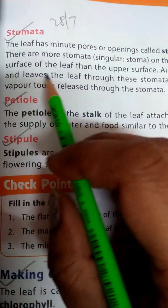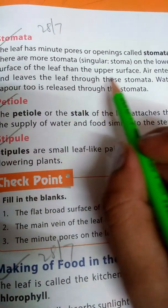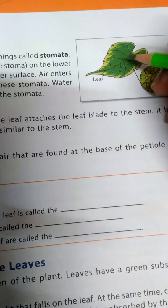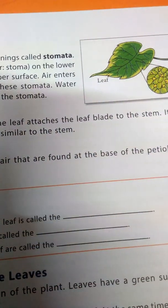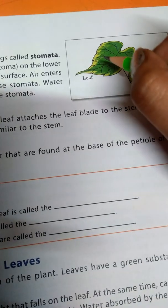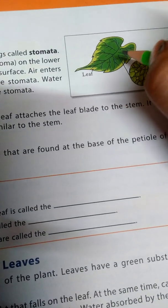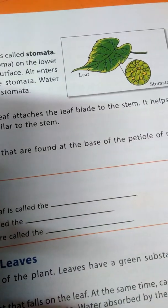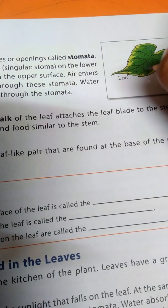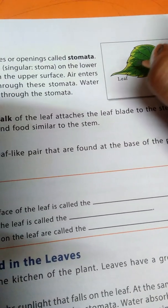Water vapor is released through the stomata. These small pores are very important — the plant takes in and releases carbon dioxide and oxygen through them. Just like nostrils in humans, stomata serve as the breathing openings of the leaf.